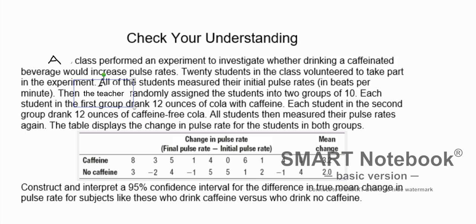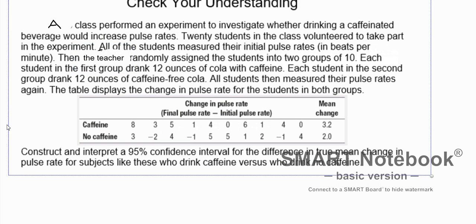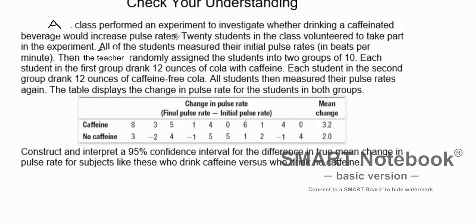Let's try a problem right here. This is an example where a class performed an experiment to investigate whether drinking a caffeinated beverage would increase pulse rate. 20 students in the class volunteered to take part in this experiment. All students measured their initial pulse rates in beats per minute, and then the teacher randomly assigned the students into two groups of 10. Each student in the first group drank 12 ounces of cola with caffeine, each student in the second group drank 12 ounces of caffeine-free cola, and then they measured their pulse rates.